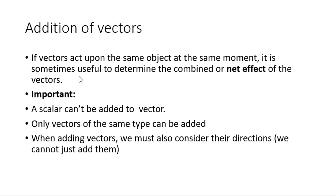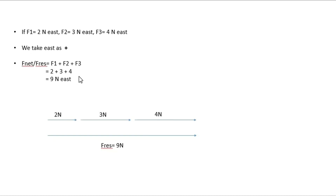Addition of vectors: if vectors act upon the same object at the same moment, it is sometimes useful to determine the combined or net effect of the vectors. A scalar cannot be added to a vector — only vectors of the same type can be added. When adding vectors, we must also consider their directions; we cannot just add them like scalars. For example, if F1 is 2 newtons east, F2 is 3 newtons east, and F3 is 4 newtons east, all vectors are going in the same direction, hence we can add them.